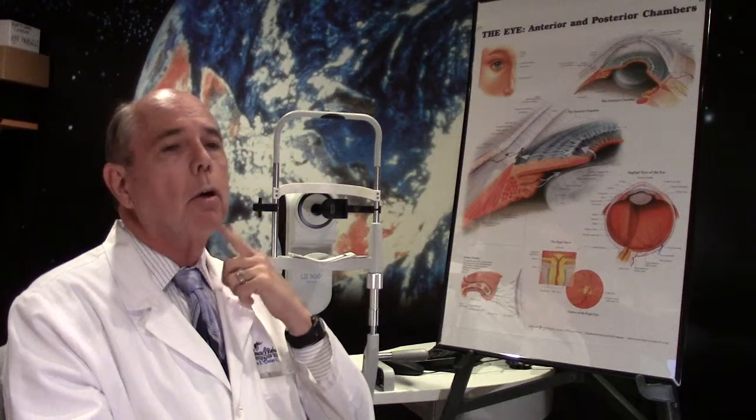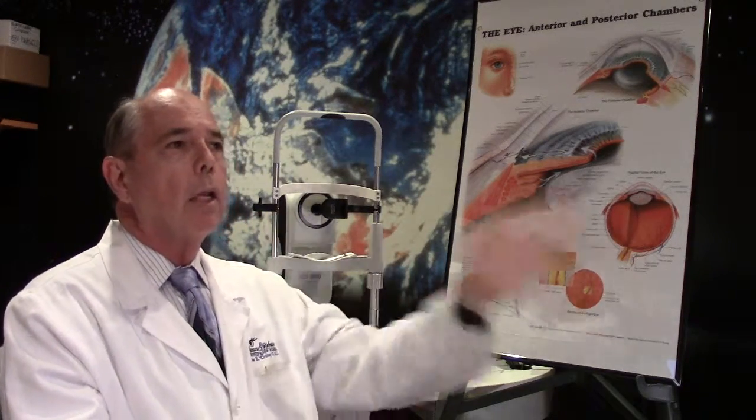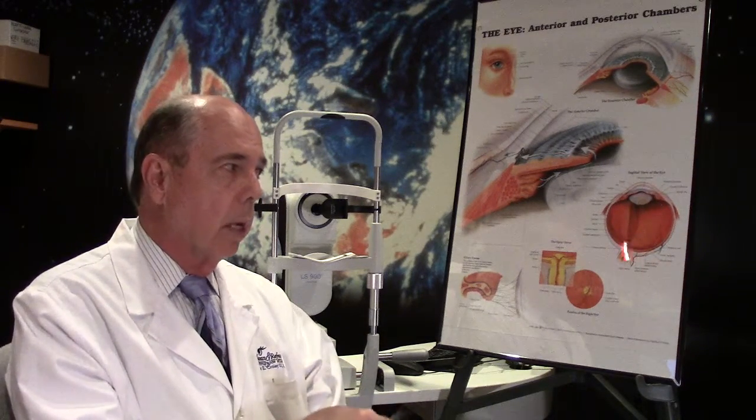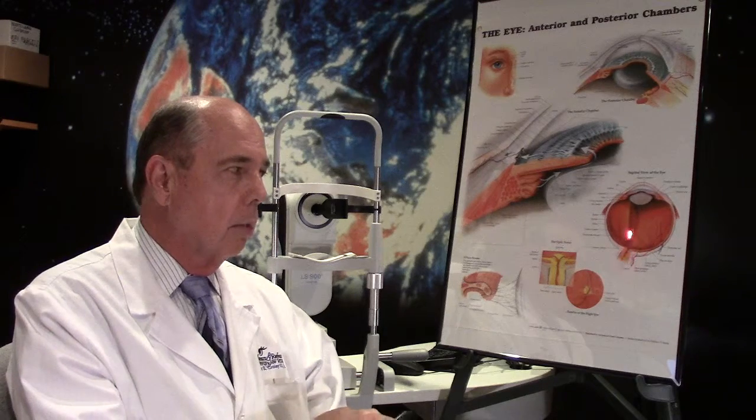The plaques in your artery in your neck can break off and then go into your brain and cause a stroke, or in this case, basically a stroke to the retina as the plaque entered the central retinal artery and got inside the eye.